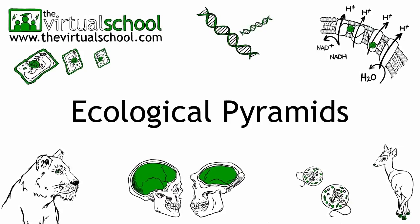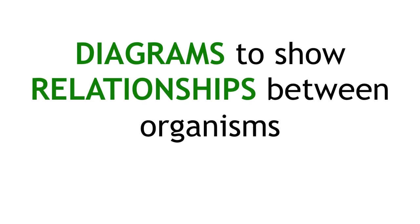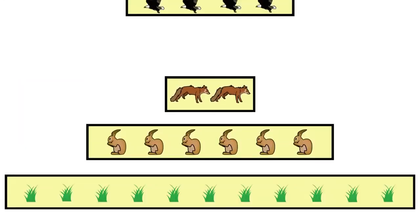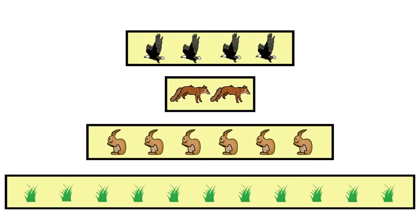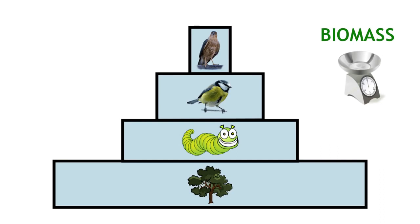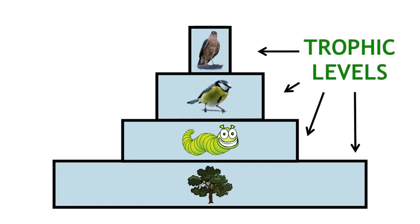Ecological pyramids are diagrams used to display quantitative data and show the relationship between organisms in an ecosystem. They are made up of bars stacked on top of one another. They can be used to show number of organisms or biomass of each trophic level in the ecosystem. They visually describe the quantities that we see in food chains and food webs.